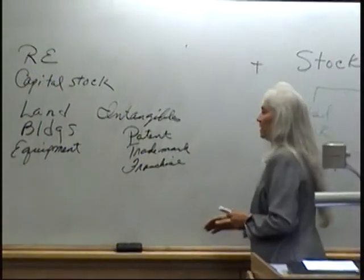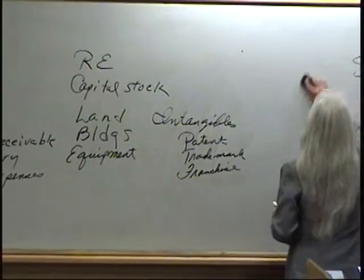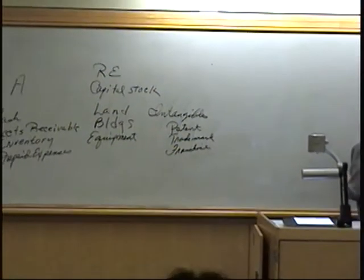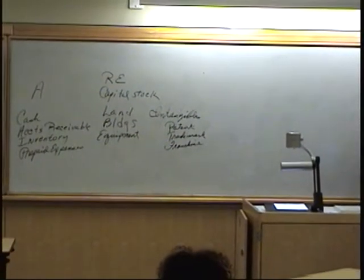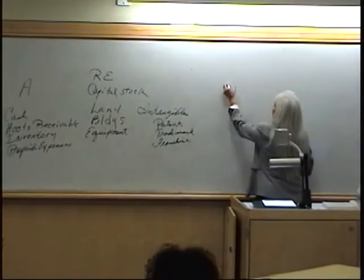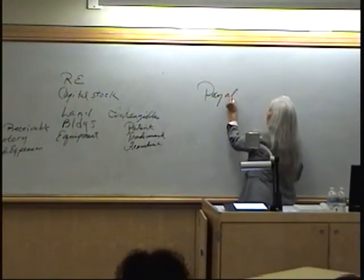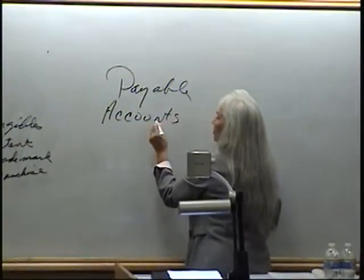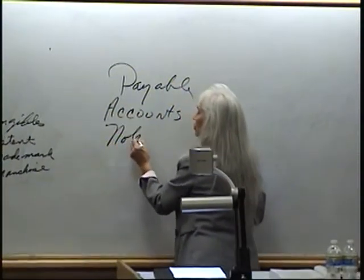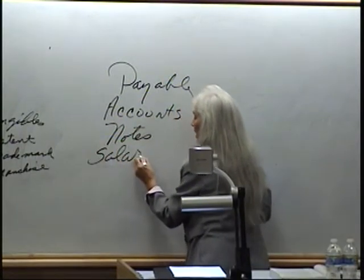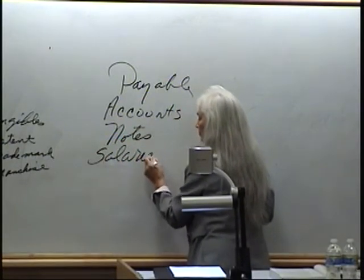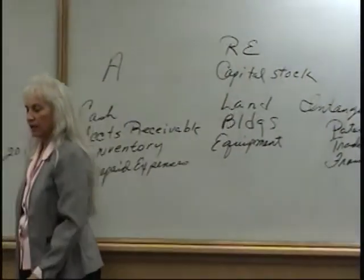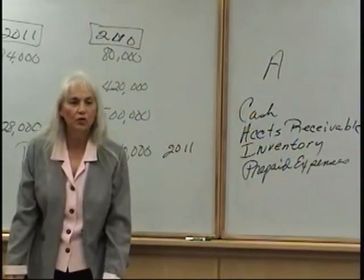Looking at your liabilities, when you look at your liabilities, what is the key word that identifies it as a liability? Payable. You can have accounts payable, you can have notes payable, you can have salaries payable. Payable is anything that you owe, but the key word is payable — that means you have a debt, you owe someone.